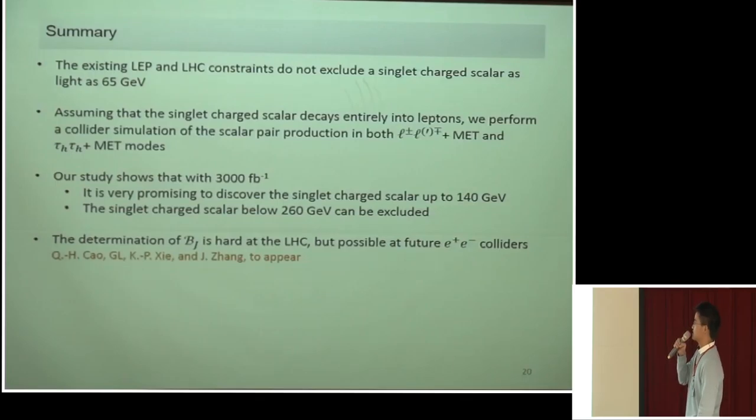Let me summarize my talk. The existing LEP and LHC constraints do not exclude a singly charged scalar as light as 65 GeV. Assuming the singly charged scalar decays entirely into leptons, we perform a collider simulation of the scalar pair production in both di-lepton and di-tau channel. Our study shows that with 3000 inverse femtobarn, it is very promising to discover the singly charged scalar up to 140 GeV, while it can also exclude the singly charged scalar below 260 GeV. Since the determination of the branching ratio into jets is hard at LHC, but it is possible at the future electron-positron collider. And this work will appear soon. Thank you.